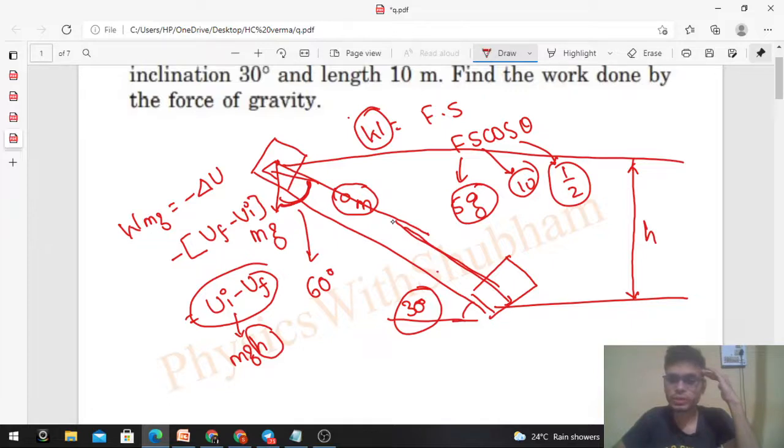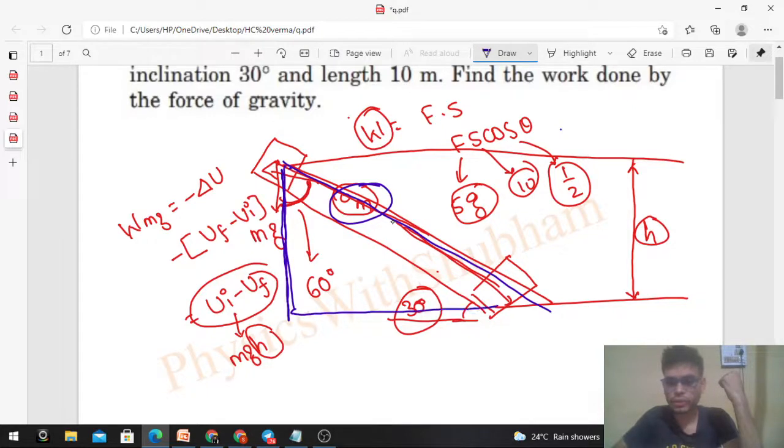So h can be found simply - you know the angle is given and displacement is given. So this length is 10, and its sin 30 will be your h. See, this is 10 meters. The sin 30 of this will be h. This angle is 30 because in this triangle, this angle is 30 and this length is 10 meters.